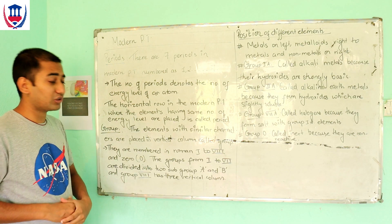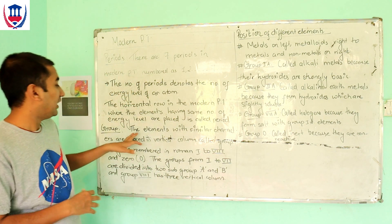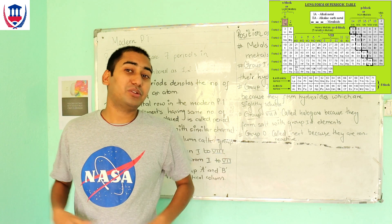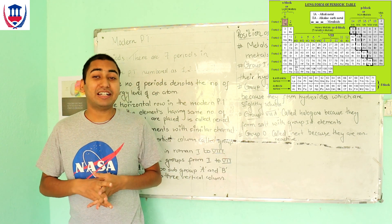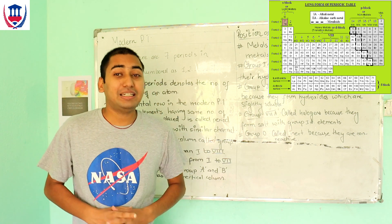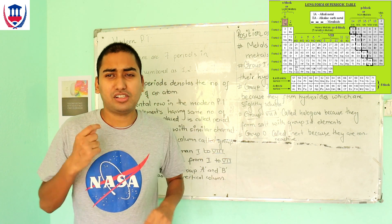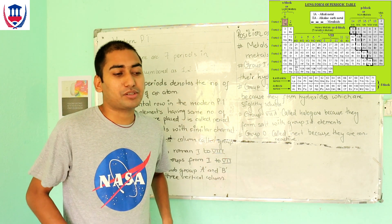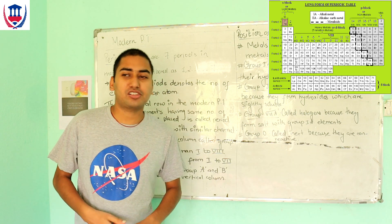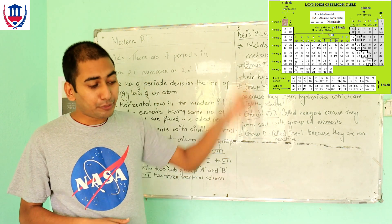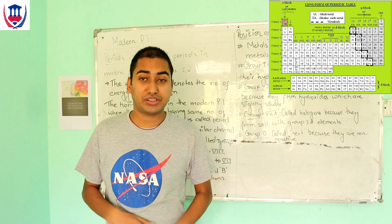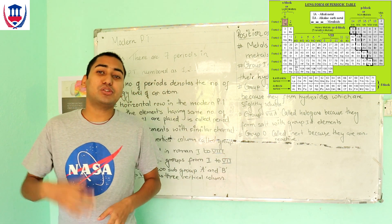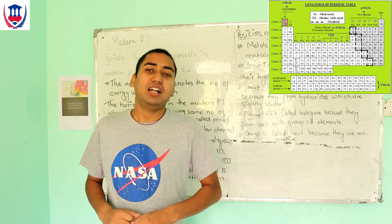Now let's go through the Groups. Elements with similar characteristics are placed in a vertical column. The vertical column is called a Group — same characteristics, various elements. For example, Group 1 contains alkali metals, which are highly reactive soft natural metals.